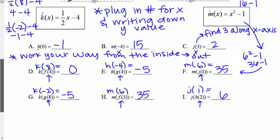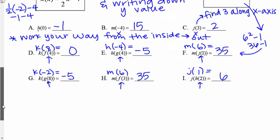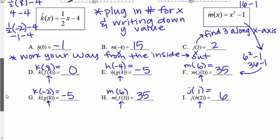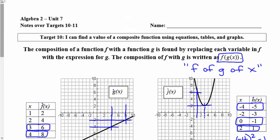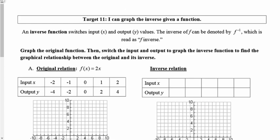You're working your way from the inside out and plugging numbers in for x for whatever relation you're supposed to be looking at. If it says k of some number, you find the relation of k and plug in that number for x. That's target 10. Let's do target 11.